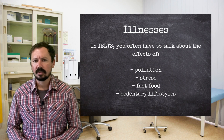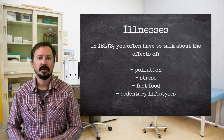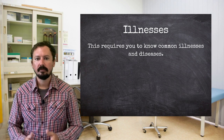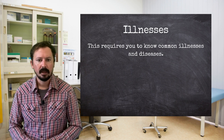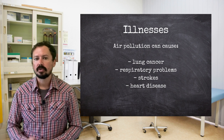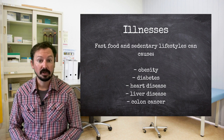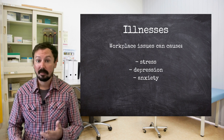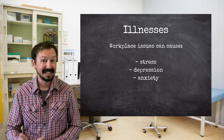As the subject of health often entails some discussion of health problems, it is worth knowing various illnesses so that you can talk about them. One common way that this occurs is in IELTS writing task two, where you frequently have to mention the effects of pollution, stress, fast food or sedentary lifestyles. In such cases, it is helpful to know illnesses and diseases. For example, when talking about air pollution, you might mention lung cancer, respiratory problems or strokes. When talking about fast food and sedentary lifestyles, you could talk about obesity, diabetes and heart disease. When talking about issues in the workplace, perhaps you might discuss stress, depression or anxiety. The list is endless — it totally depends on your ideas, but it is worth knowing some common illnesses that you can mention.